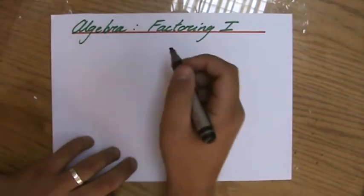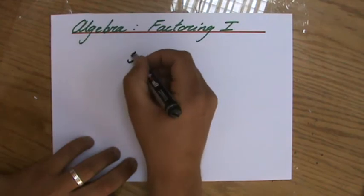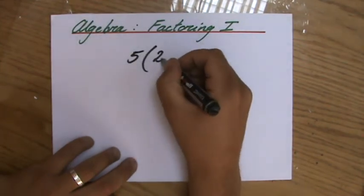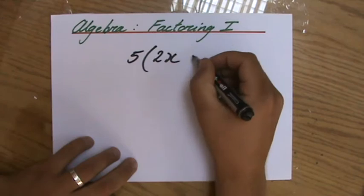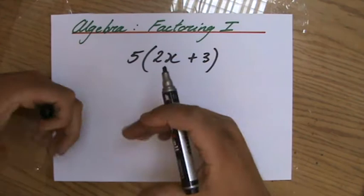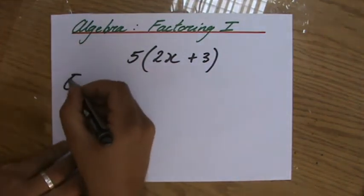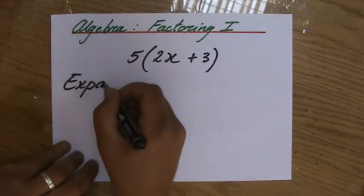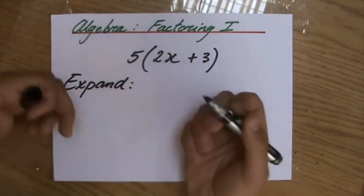Just to go back a little bit, what have you done before? Well, you've got expressions like this, for instance, 5 bracket 2x plus 3, and you were asked to expand the expression.